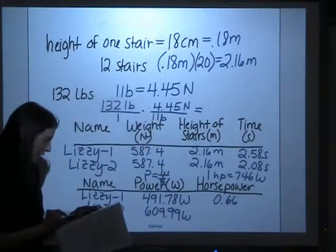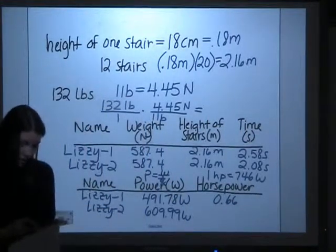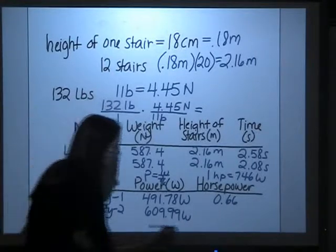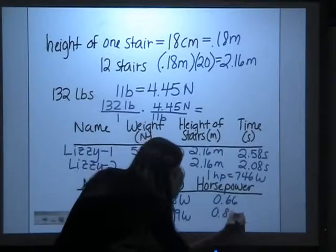And the second one, 609.99 divided by 746, gives a horsepower of .82.